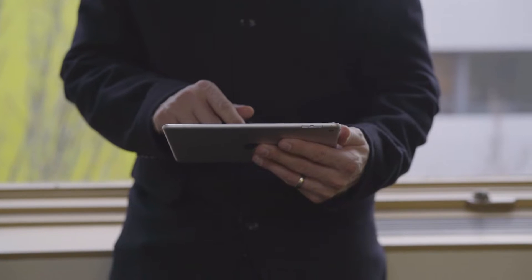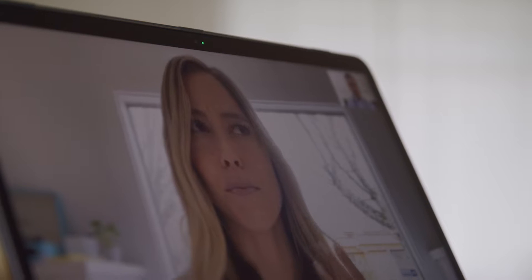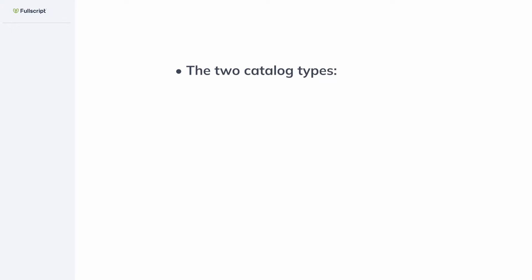Fullscript's industry-leading catalog features healthcare's highest quality products, available for you to dispense virtually, in-office, or both. In this video, we'll take a look at the two Fullscript catalog types, which are the plan building catalog and the wholesale catalog.